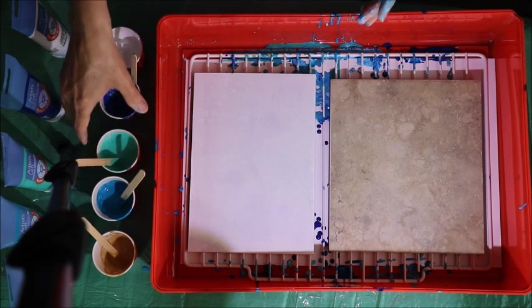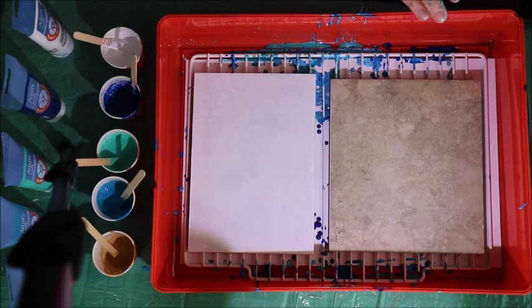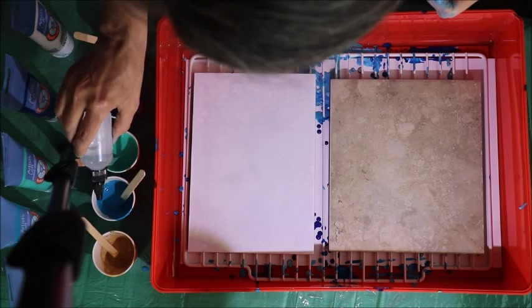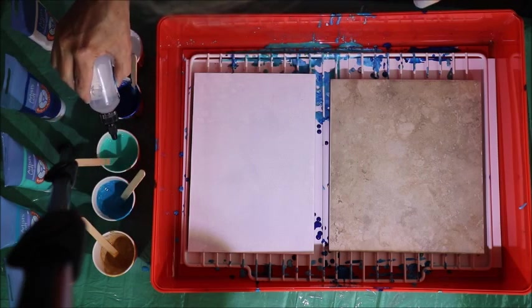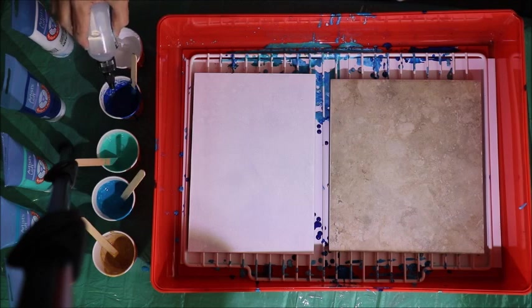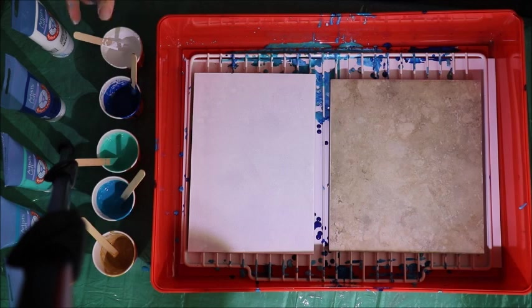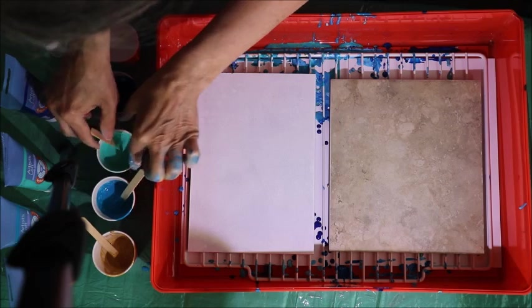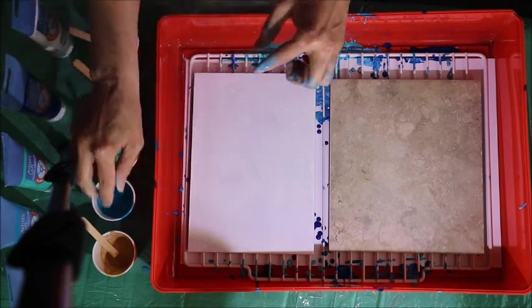Now again, if you want to see all of the materials that I use in this, you can check in the description down below. So I'm going to put a little bit of silicone in each little color of paint in the hopes that that will help some cells come out, which are bubbles. So give that a little mix.